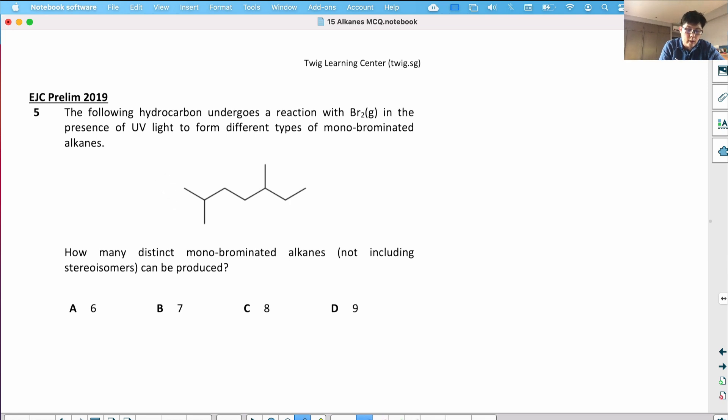So brominated - this H can be kicked out to be replaced by the Br. That's one. The H from here, there's a H over here, it can also be replaced with a Br. So this is two.